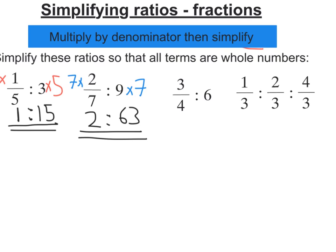Now we're on to three-quarters to six. We multiply by the denominator, that is four, so times both by four. On the right-hand side we're left with 24. By multiplying by the denominator we're just left with the numerator, three to 24. Three goes into both three and 24. So three divided by three is one, 24 divided by three is eight. We get one to eight.